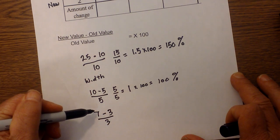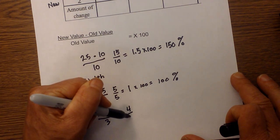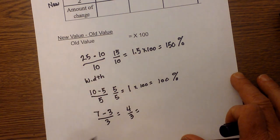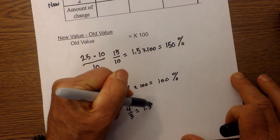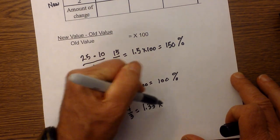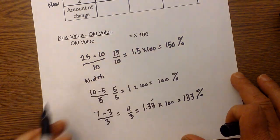That's 4 over 3. And 4 divided by 3 is 1.33 repeating times 100, so it increased to 133 percent.